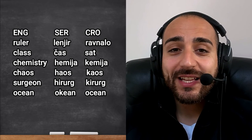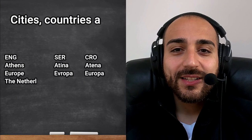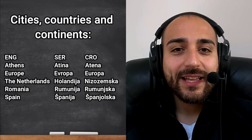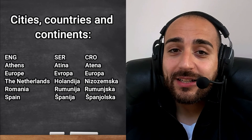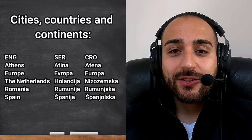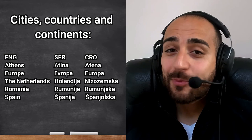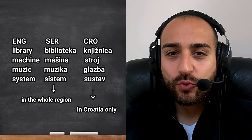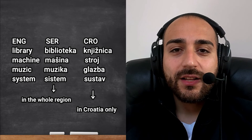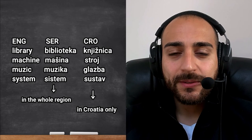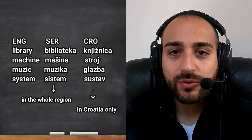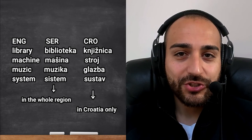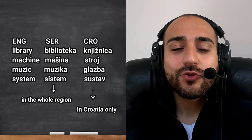Cities, countries, and continents — some are slightly different: Athens — 'Atina' vs 'Atena'; Europe — 'Evropa' vs 'Europa'; Holland — 'Holandija' vs 'Nizozemska'; Romania — 'Rumunija' vs 'Rumunjska'; Spain — 'Španija' vs 'Španjolska'. There are also words from Slavic roots used only in Croatia, while international counterparts are used in Serbia: library — 'biblioteka' vs 'knjižnica'; machine — 'mašina' vs 'stroj'; music — 'muzika' vs 'glazba'; system — 'sistem' vs 'sustav'.